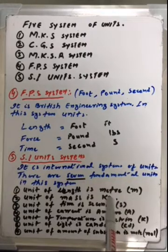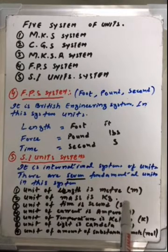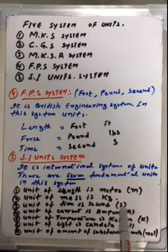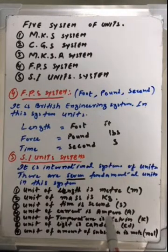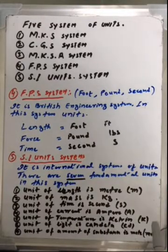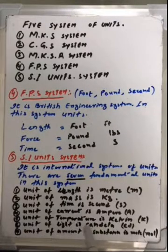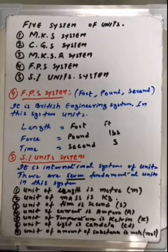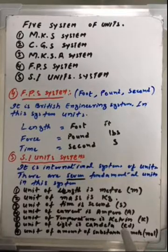Number one, unit of length is meter (m). Number two, unit of mass is kilogram (kg). Number three, unit of time is second (s). Number four, unit of current is ampere (A). Number five, unit of temperature is Kelvin (K). Number six, unit of light is candela (cd). Number seven, unit of amount of substance is mole (mol).